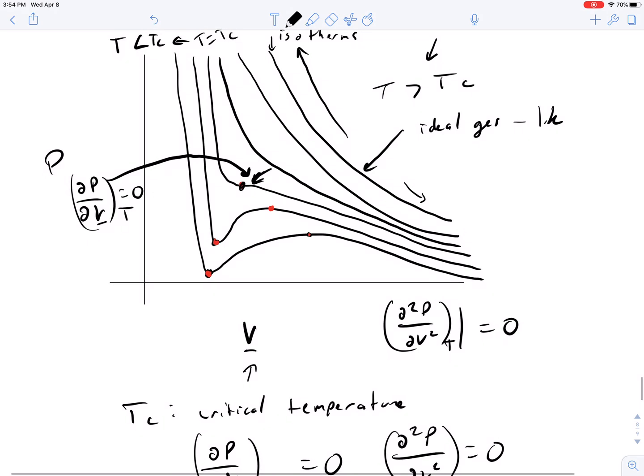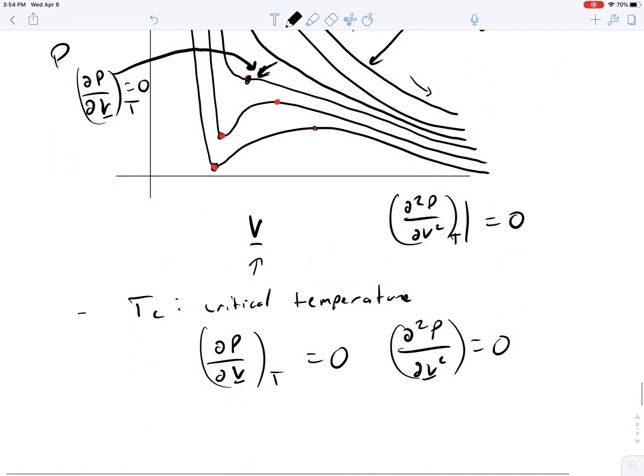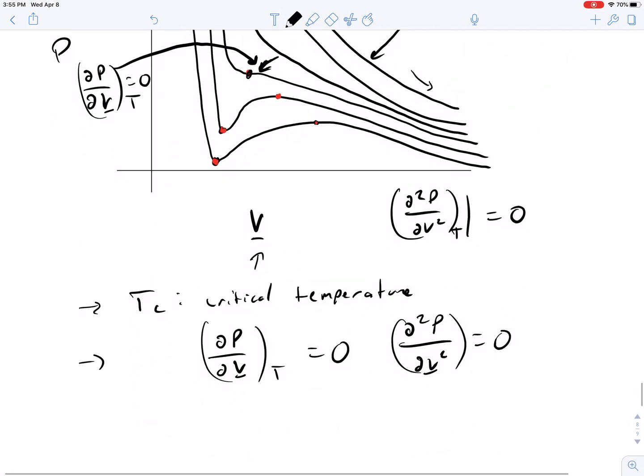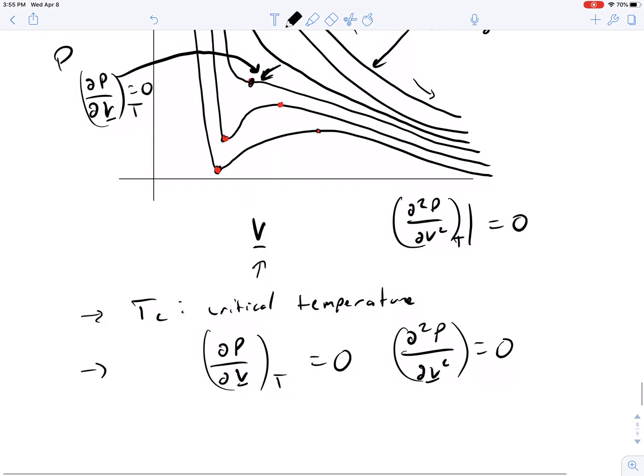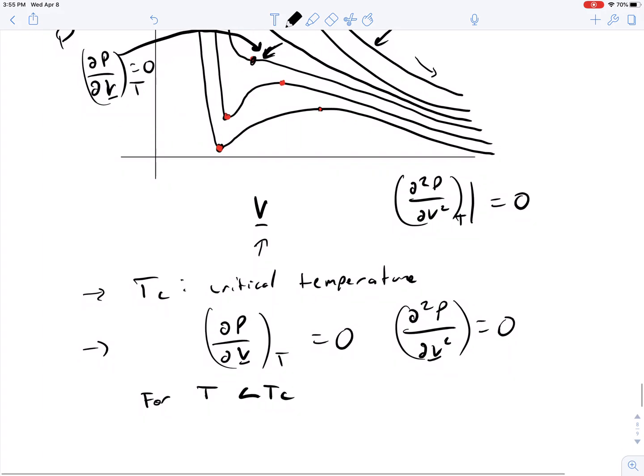And the pressure-volume curve where this happens occurs at this critical temperature that is defined by having a point that has those two features. Now what is happening for T less than Tc? For T less than Tc, there are two points where the derivative of pressure with respect to volume at a constant temperature is equal to zero.